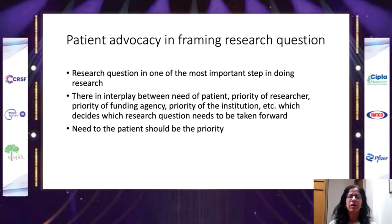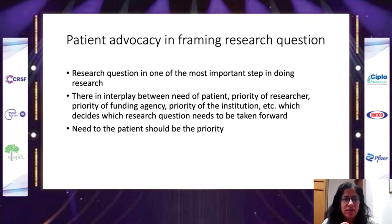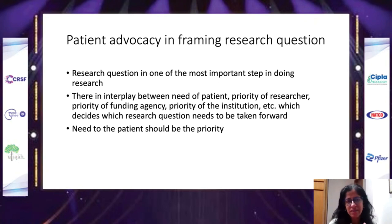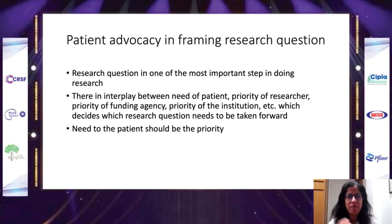When we start clinical trial research, the question of how to improve patient care is one of the most important steps. In deciding that research question, there is an interplay between the needs of the patient, the researcher's priorities, the funding agency's priorities, and the institution's priorities. All of these must come together to decide the most feasible research question to take forward — and ultimately, patient need has to be the priority.